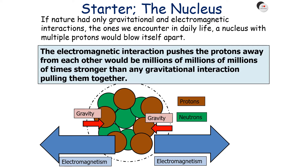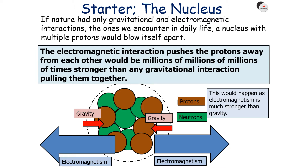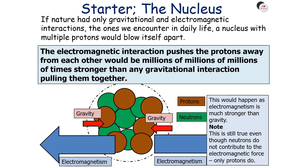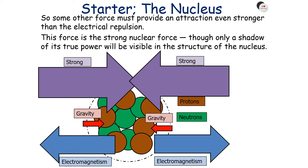If nature only had the gravitational and electromagnetic interactions — the ones we encounter in our daily lives — a nucleus with multiple protons would blow itself apart. This is because the electromagnetic interaction pushes the protons away from each other, and that force would be millions and millions of times stronger than any gravitational interaction pulling them together. Even though neutrons don't contribute to the electromagnetic force, only protons do, some other force must provide an attraction even stronger than the electrical repulsion between the protons.